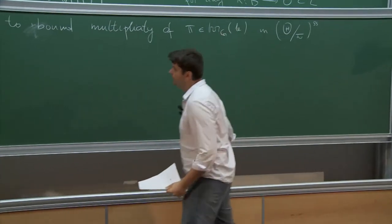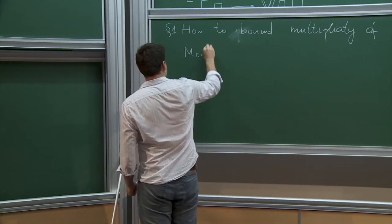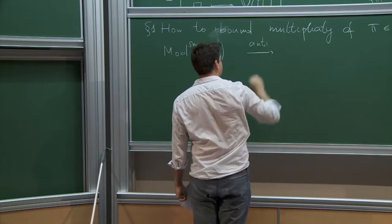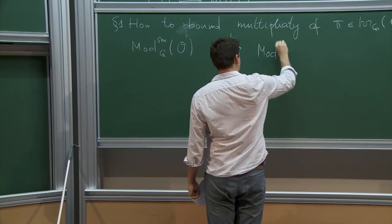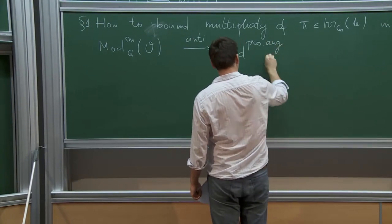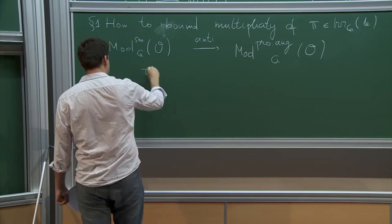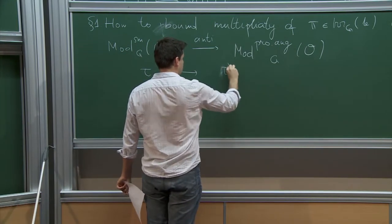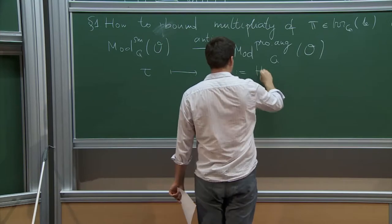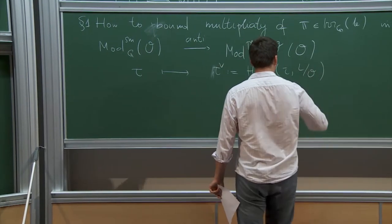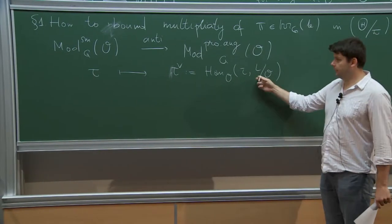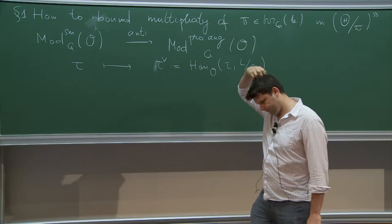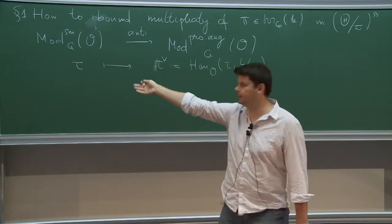So I have smooth representations of G on O-torsion modules. This is anti-equivalent to a certain category Mod of profinite augmented G-O modules. This anti-equivalence sends a representation to its Pontryagin dual — Hom_O(τ, L/O) — equipped with the compact-open topology. Here I take a discrete thing and take the Pontryagin dual, and I get something compact.